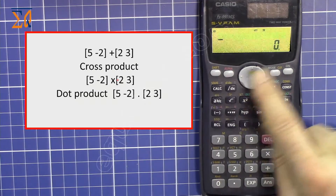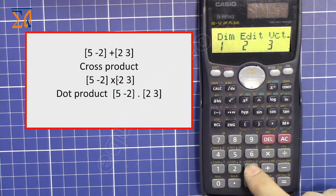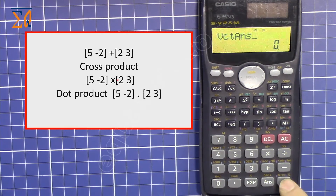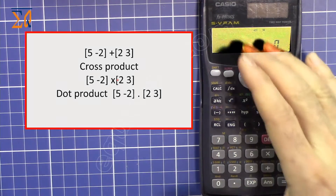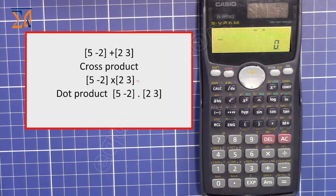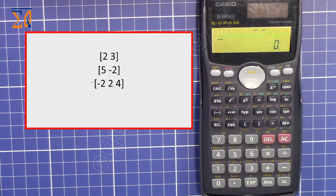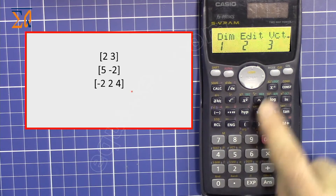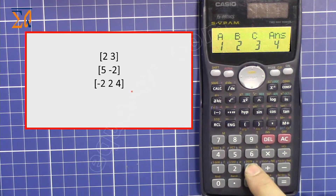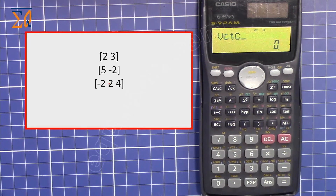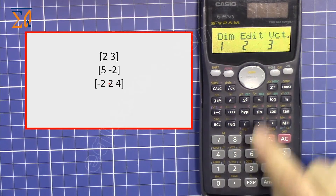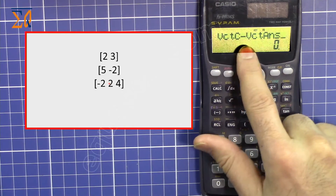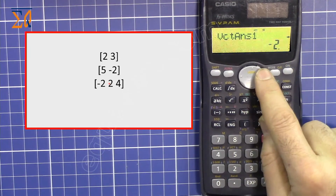To recall the last answer, press SHIFT 5, then 3, then 4 for the answer. Press equals to review: 0, 0, and 19. You can also use this answer in further calculations. For example, to subtract vector C from the answer: press SHIFT 5, then 3, then 3 to recall C, then minus, then SHIFT 5, then 3, then recall the answer. The result is [-2, 2, -15].